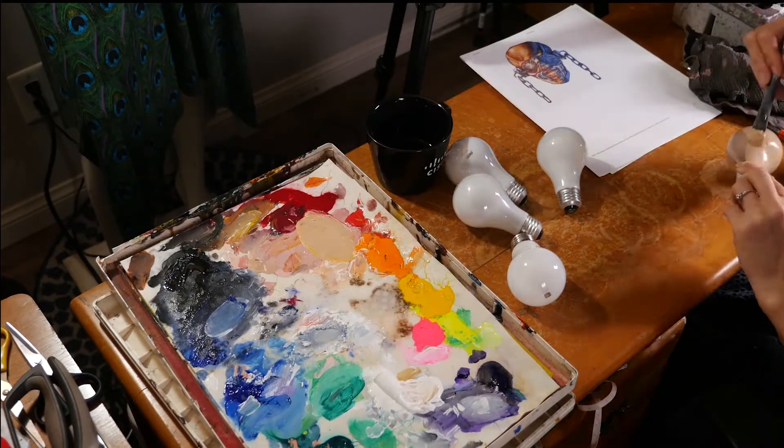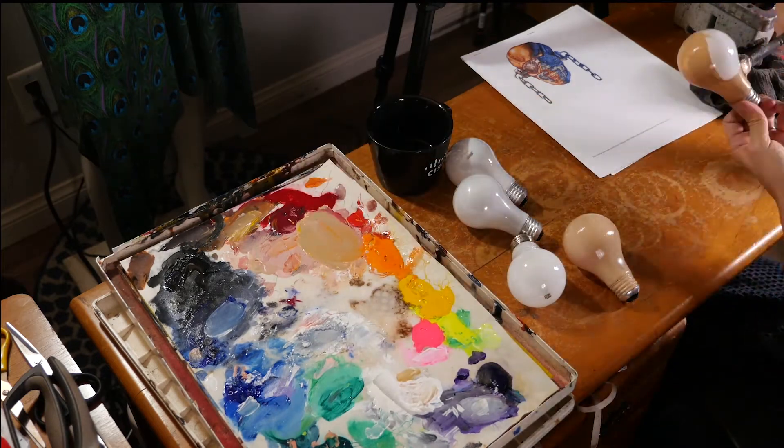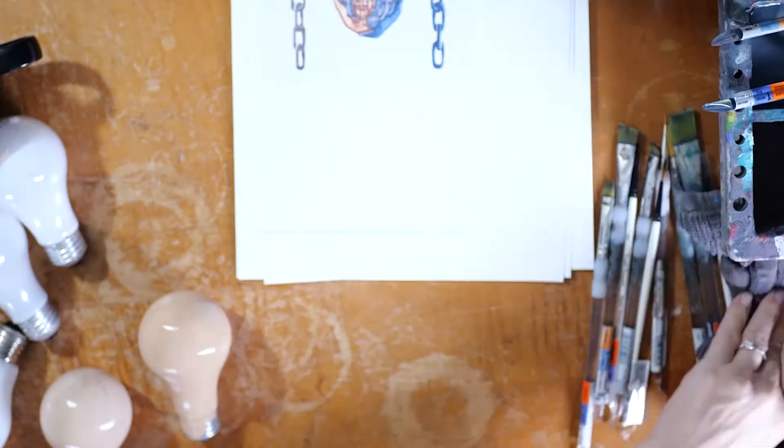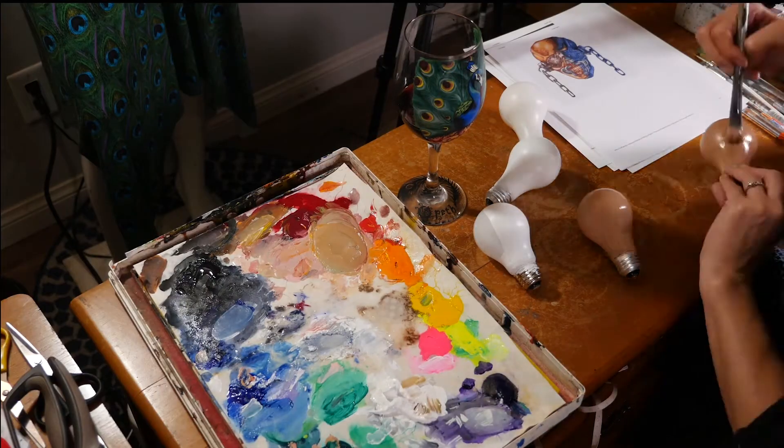We're going to start by mixing up a neutral kind of fleshy brown tan color. You can buy this color pre-bought with some craft paint, but I like to mix my own colors. You can get this color by pretty much mixing any two neutrals.